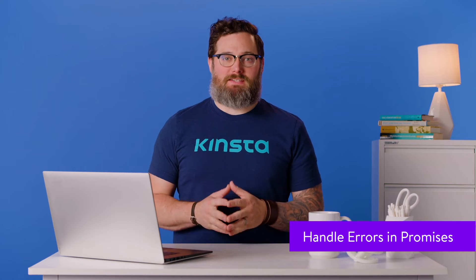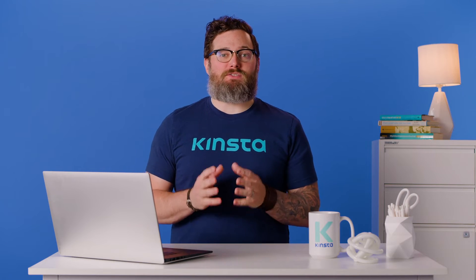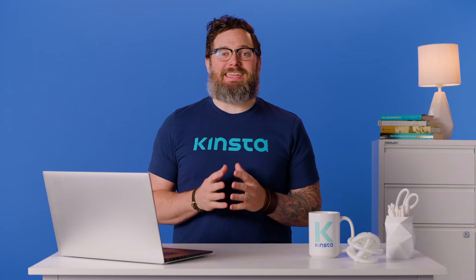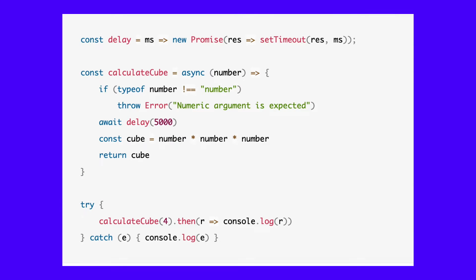Most people tend to prefer promises for handling asynchronous activities. Promises have another advantage: a rejected promise doesn't terminate your script. However, you still need to implement a catch block to handle errors in promises. To understand this better, let's rewrite the calculate cube function using promises. The timeout from the previous code has been isolated into a delay function for understanding. If you try to enter a string instead of a number, the output that you get will be similar to this.